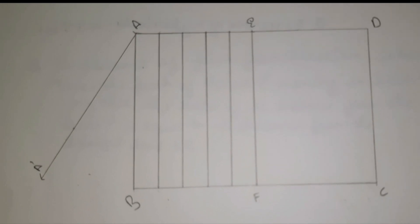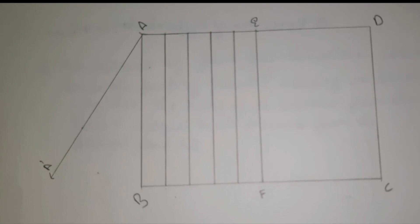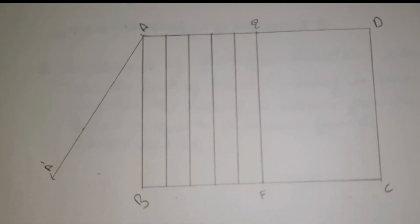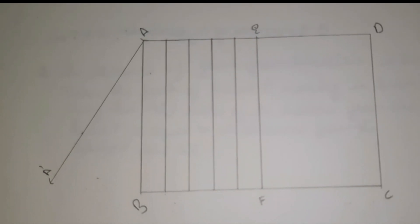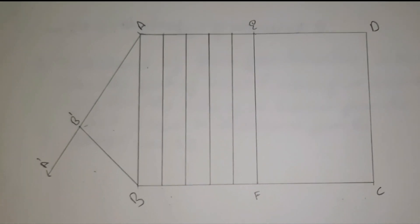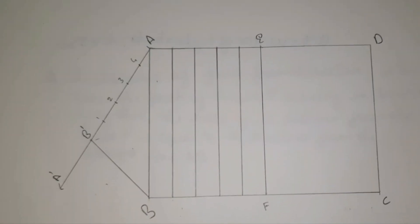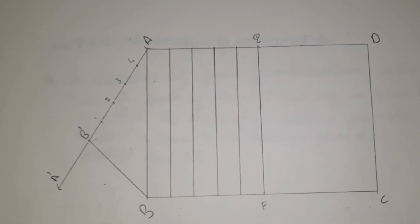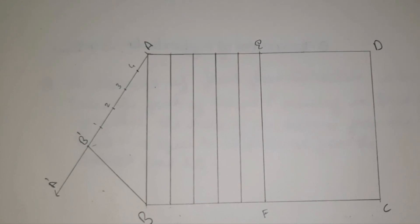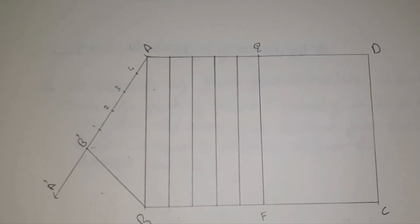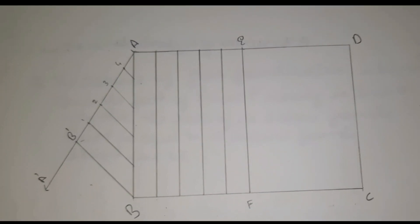The next step is to divide line AB into 5 equal parts. To do this, first make a ray AA' — the angle A'AB is 30 degrees. Next, take a point B' at 5cm and join B and B'. Take 4 points on A' and B — these 4 points are equidistant from each other, dividing line AB into 5 equal parts.